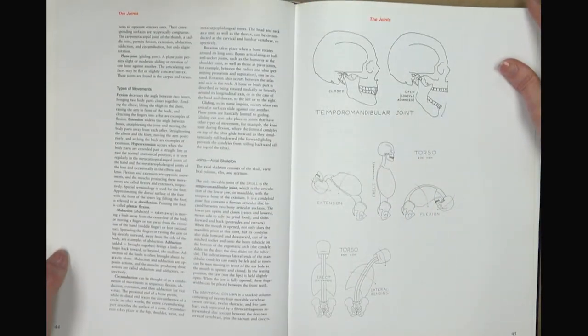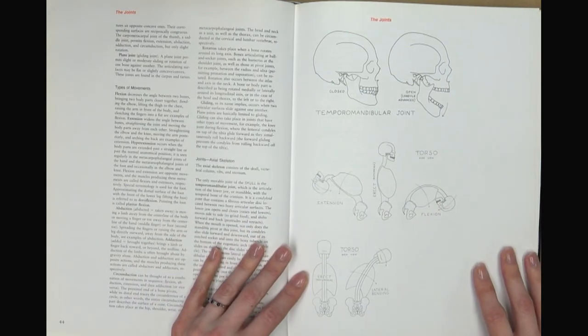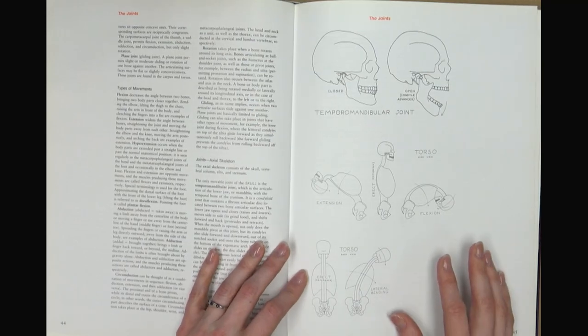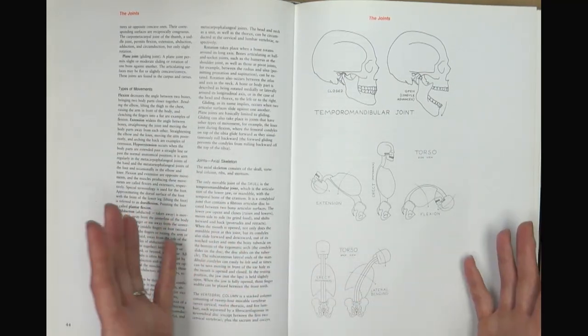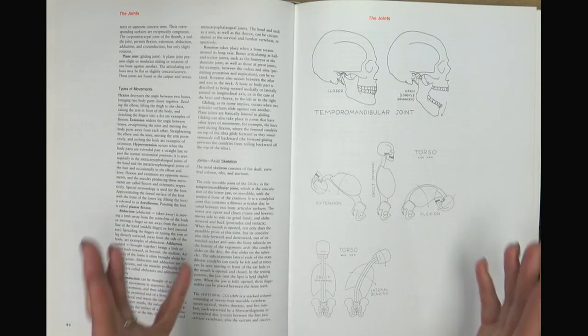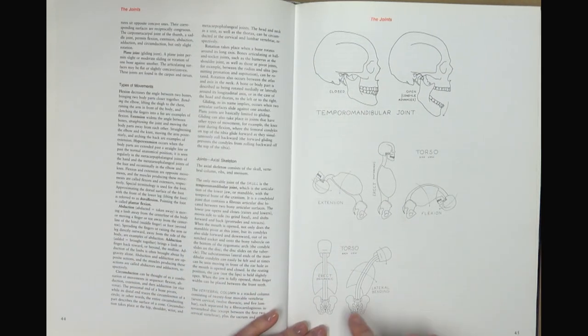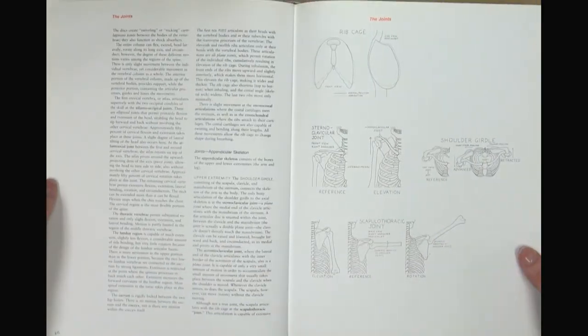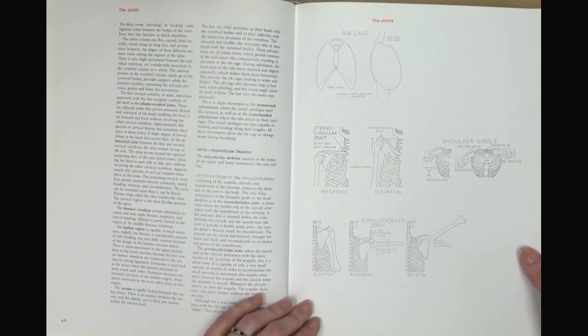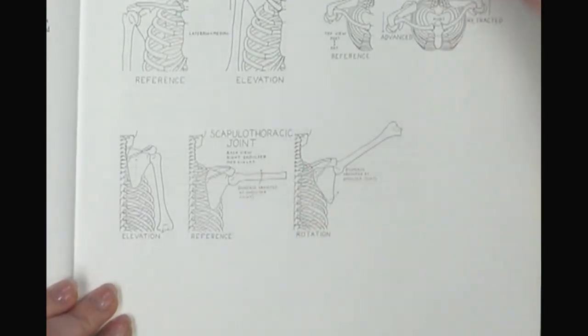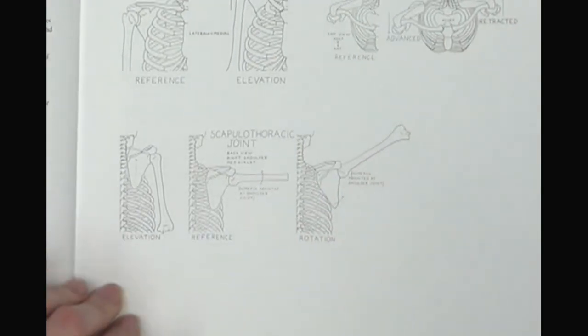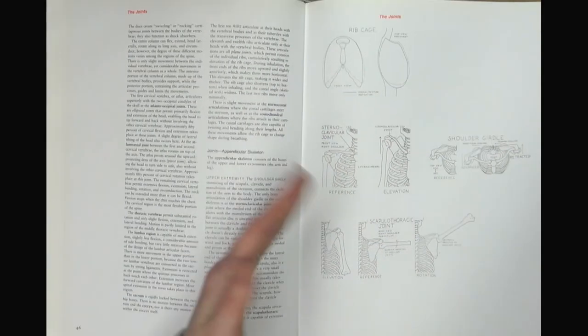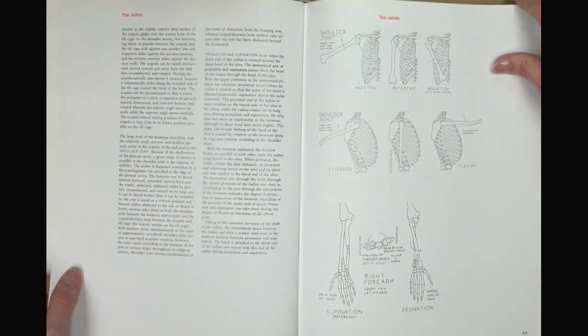Then we start to get into the joints. And there's a lot of information included about the ways that the joints move. So there's discussion of the different types of movements, because all of the different joints can be classified into different types and how they work. And pretty much all of the joints, including the shoulder, which is just so complex, are gone through.